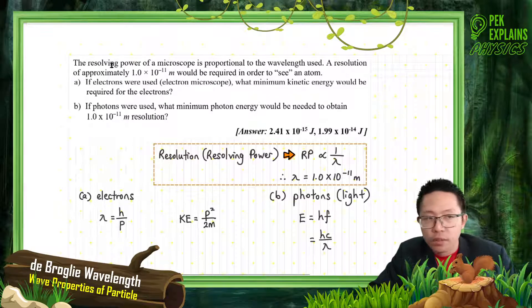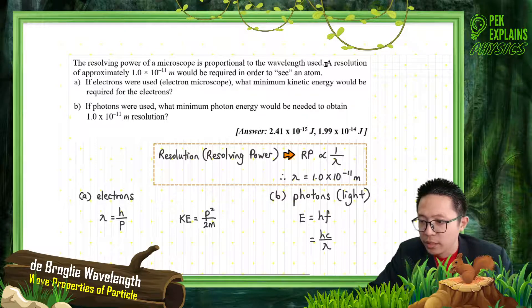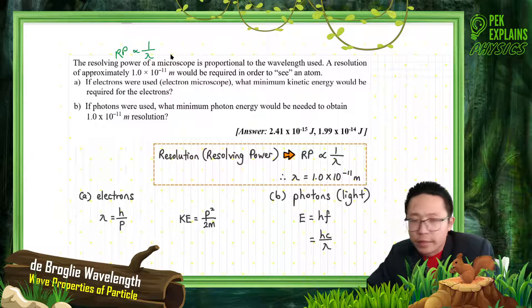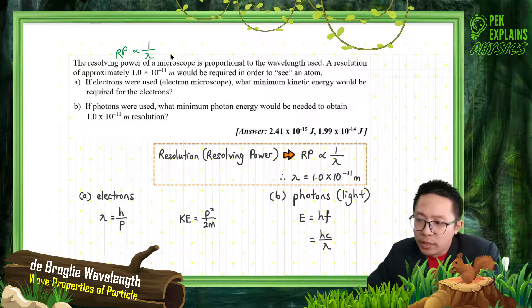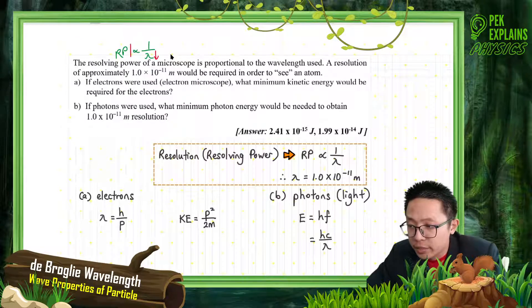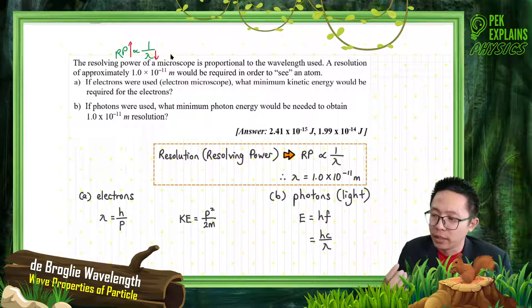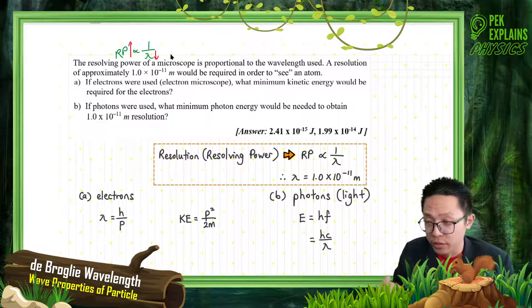The resolving power of a microscope is proportional to the wavelength used. Actually, it's inversely proportional. What I can say is the resolving power is inversely proportional to the wavelength. That means the lower the wavelength, the smaller the wavelength, the higher the resolving power. That means you use a smaller wavelength, you can achieve higher resolution of the image.